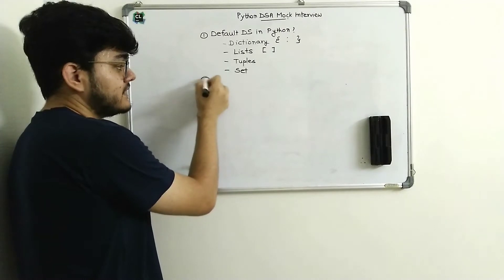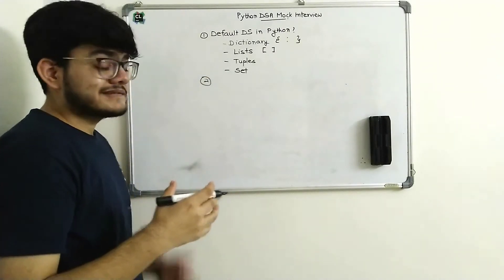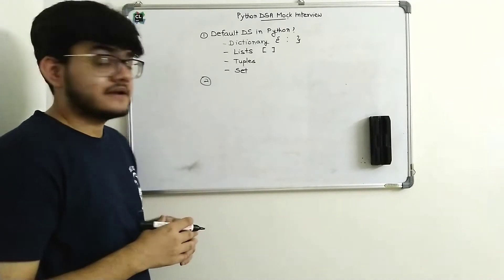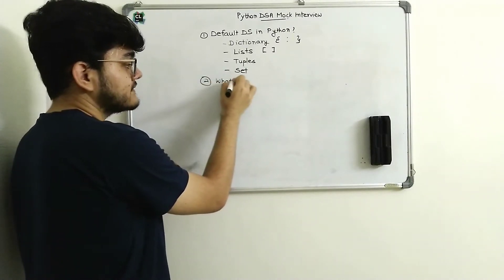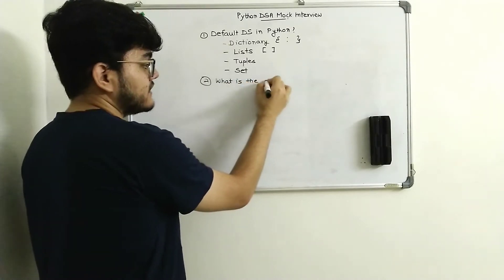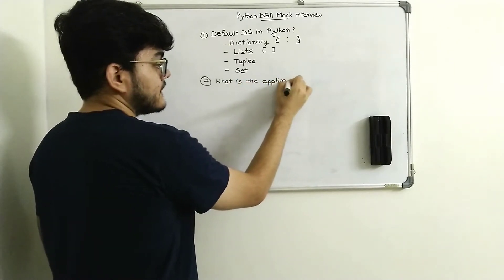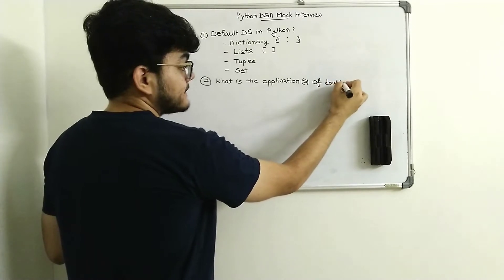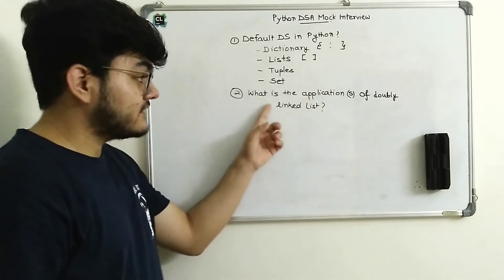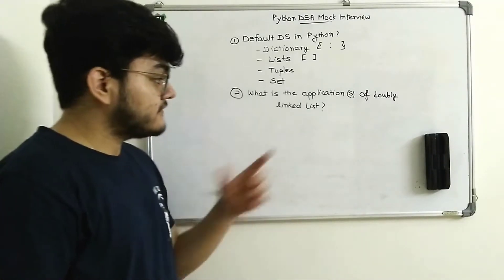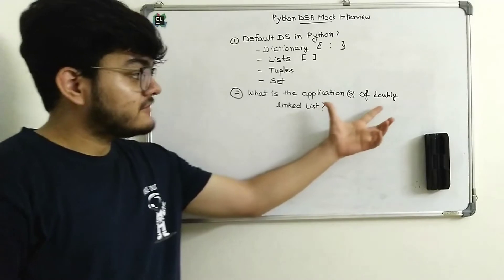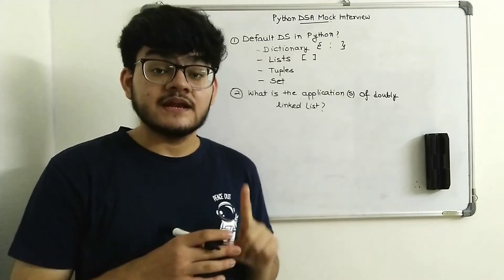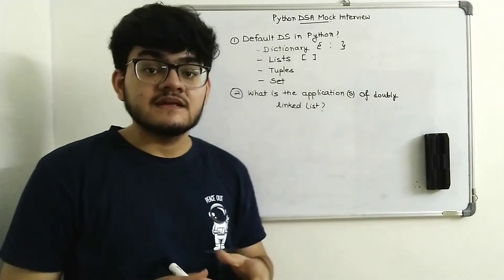Now let's move on to the second question, which is a little bit tricky because most people study data structures but forget the applications of data structures. So the second question is: what are the applications of a doubly linked list? Pause the video and answer this question without searching for the answer. When going to an interview, make sure to remember all the applications of data structures, including the time complexity of operations in those data structures.